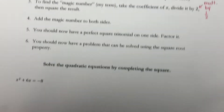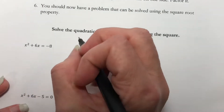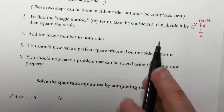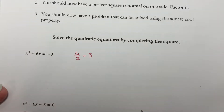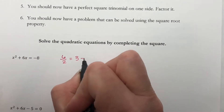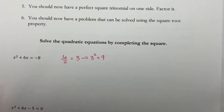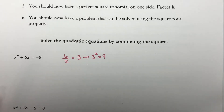Now our next step is to find the magic number, which means I need to take the number in front of x, which is a 6, divide it by 2. That gives me a 3. And then we take this answer and we square it. So my magic number is 9. You're going to have some problems where they ask you just to find what number is added to both sides — this is what you would type in, just 9.